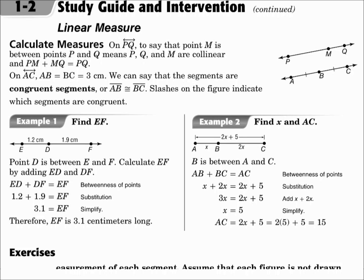Calculate measures. On line PQ, to say that point M is between points P and Q means that P, Q, and M are collinear, and PM plus MQ equals PQ. In other words, one part plus another part equals the whole thing. In a segment, the parts add up to the whole thing.